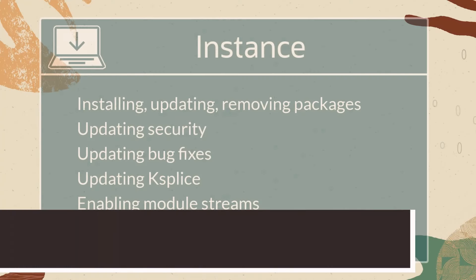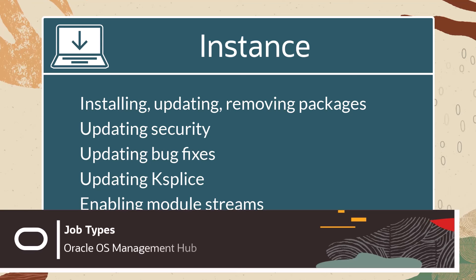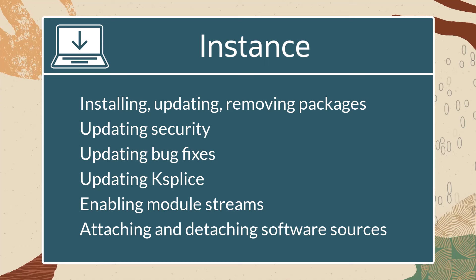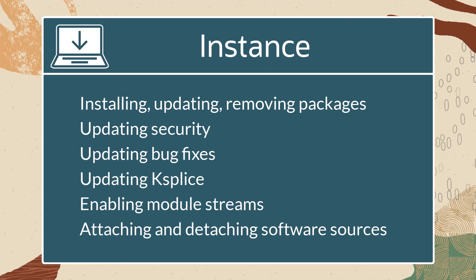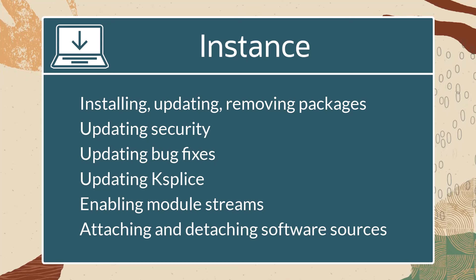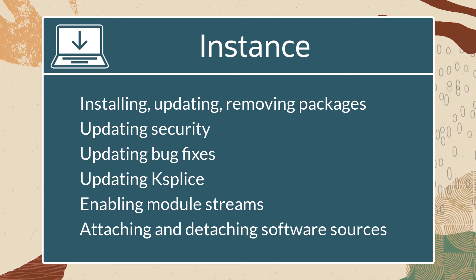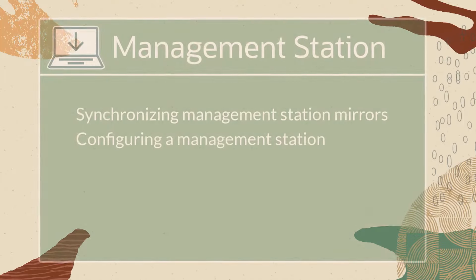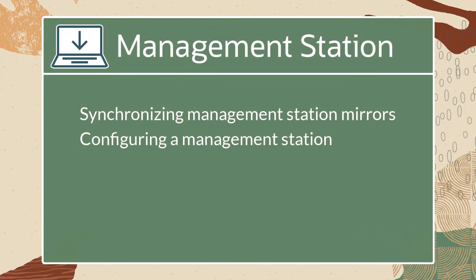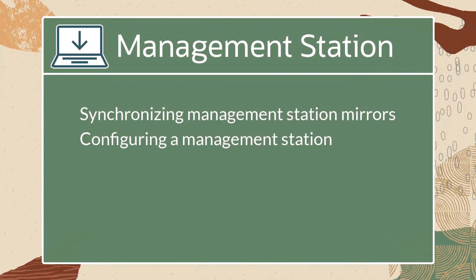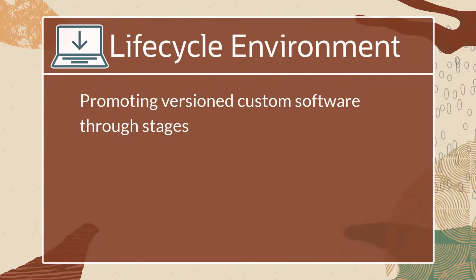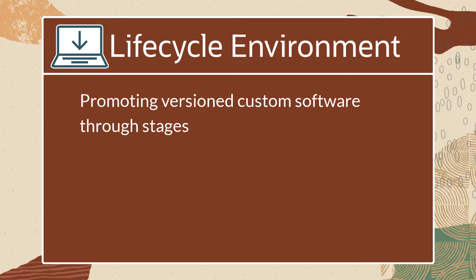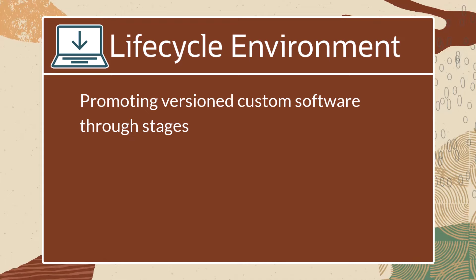Some common types of jobs taken on instances are installing packages, updating and removing packages, updating security, updating bug fixes, updating Ksplice, enabling module streams, and attaching and detaching software sources. In addition, there are jobs like synchronizing management station mirrors or configuring a management station, and there are jobs that take action on lifecycle environments, like promoting version custom software sources through lifecycle stages.